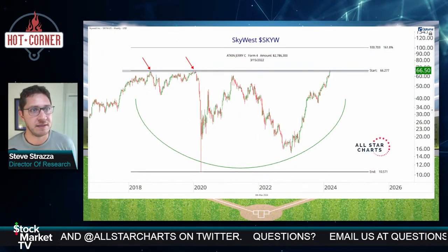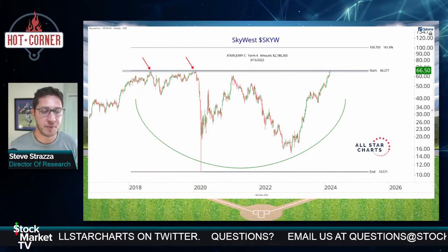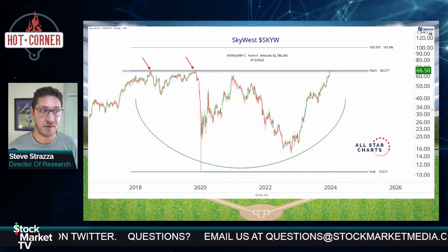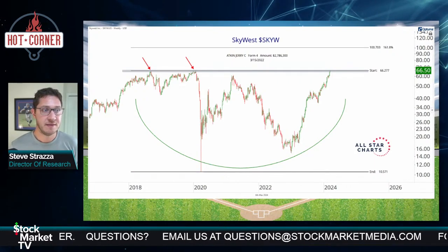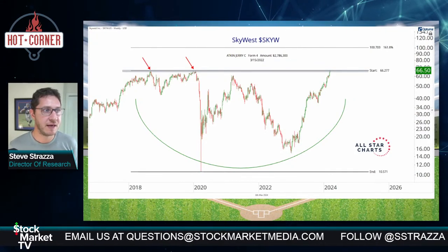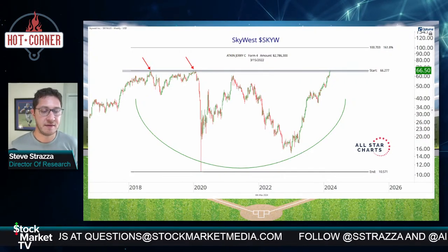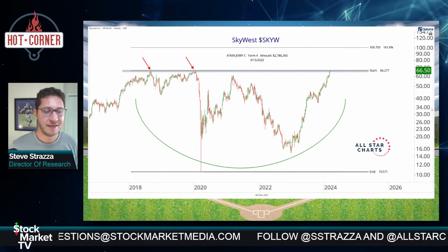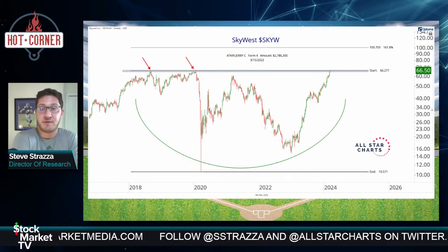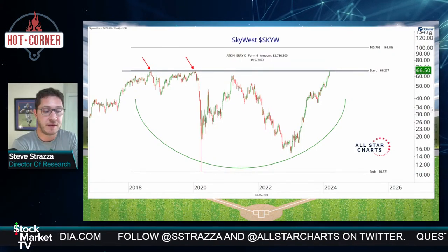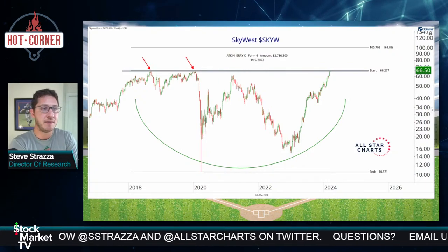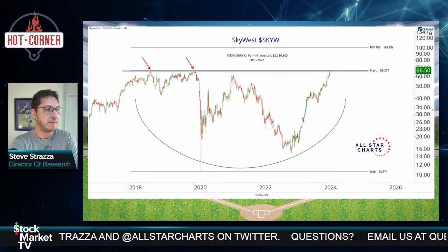SkyWest — we say a lot of not so nice things about airlines on here, because all of their charts tend to look terrible. I was shocked to see this. SkyWest, SKYW — this is an airline. Go look at Delta, American — they don't look like this. JetBlue definitely doesn't look like this. So we're above 66, multi-year consolidation pattern breaking out, target at 100. Nice and clean — that's about a 50% move.